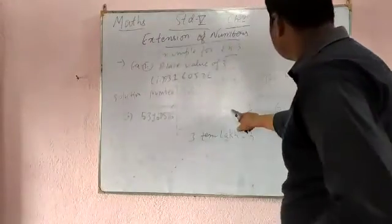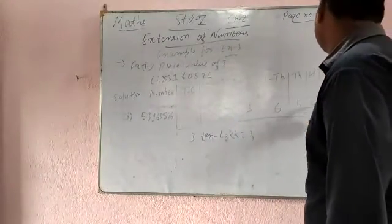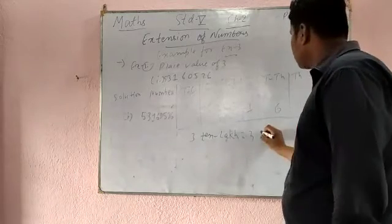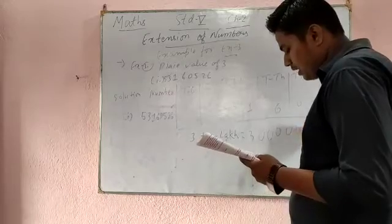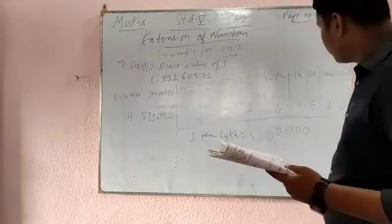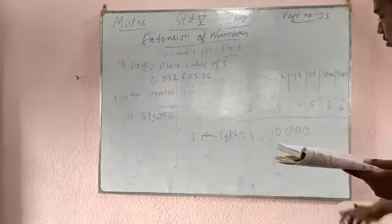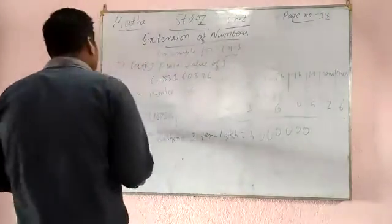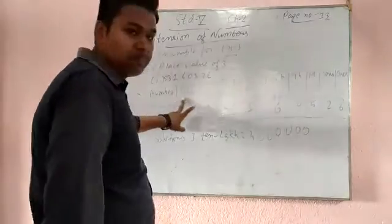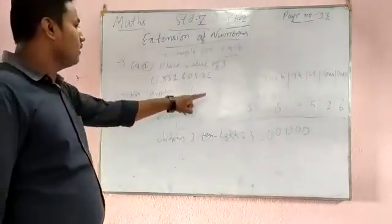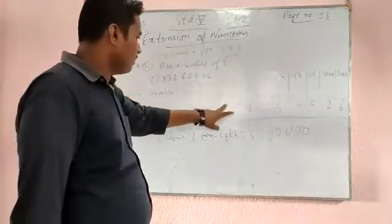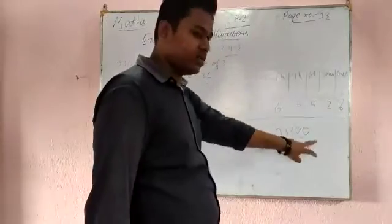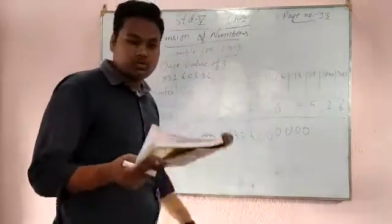After the digit 3, how many zeros are there? Count: 1, 2, 3, 4, 5, 6. So put 6 zeros after 3 and you will get the answer — the place value of 3 is 30,00,000.